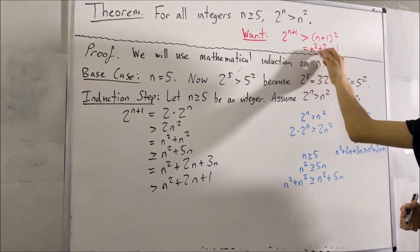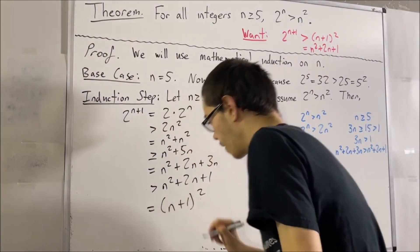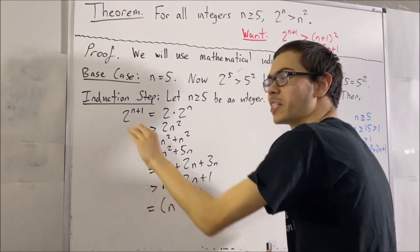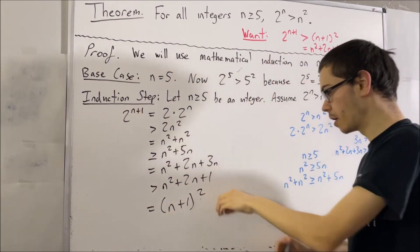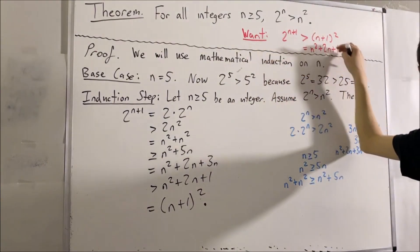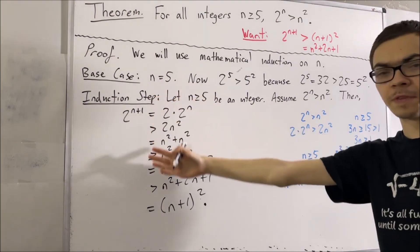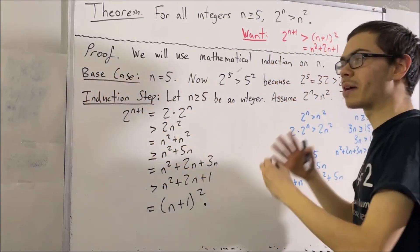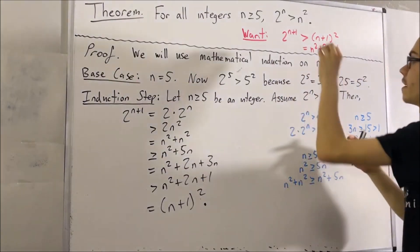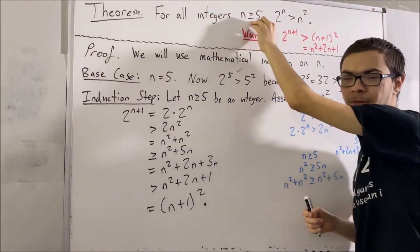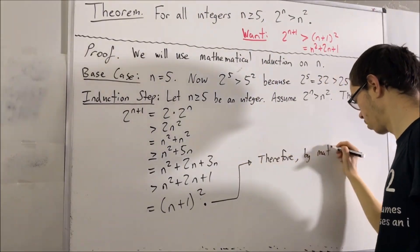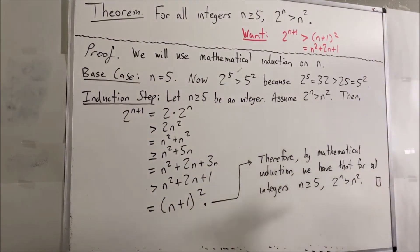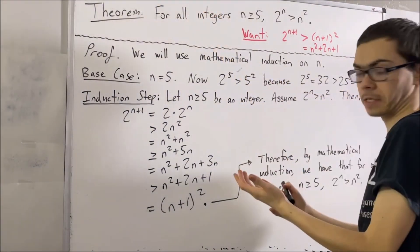I know that n squared plus 2n plus 1 is equal to n plus 1 squared. And so we have successfully shown, through this chain of equalities and inequalities, that 2 to the power of n plus 1 is, in fact, greater than n plus 1 squared. This is exactly what we wanted to prove, so this completes the proof of the induction step. Because we have proven the base case and the induction step, this amounts to having proven that this inequality is true for all integers n greater than or equal to 5. And so this completes the proof.